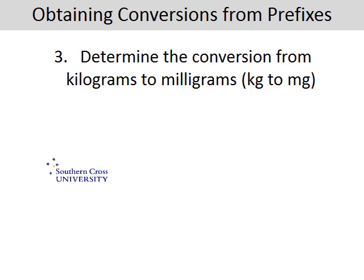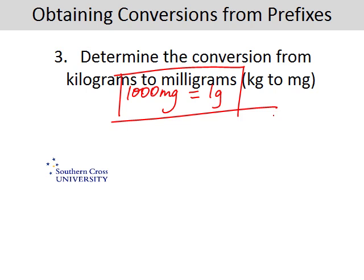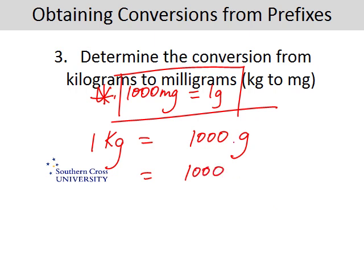We know from the previous question that it takes a thousand milligrams to equal one gram — we'll just remember that for a minute. Now, one kilogram: the word kilo means a thousand, so one kilogram, replacing kilo with a thousand, is a thousand grams. But we know that one gram is the same as a thousand milligrams. So one gram here can be replaced with a thousand — represented by three zeros — milligrams. In other words, it takes a million milligrams to equal a kilogram.